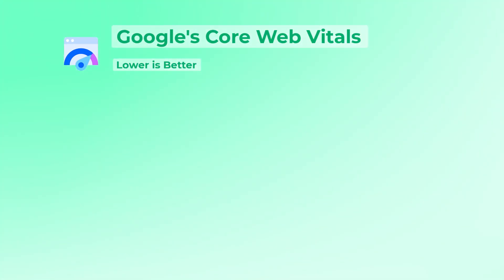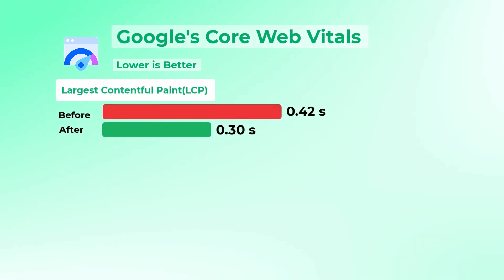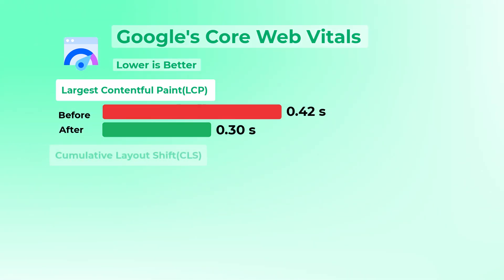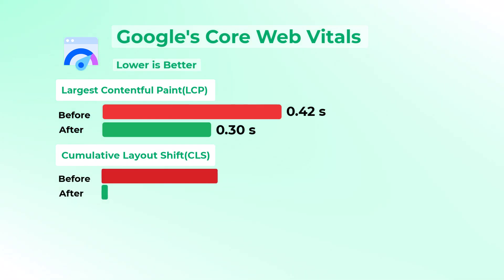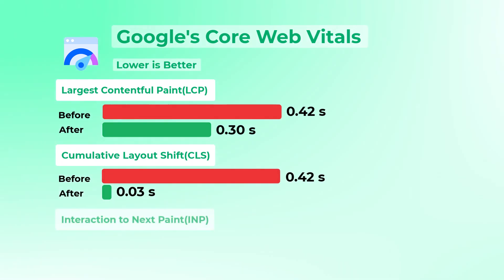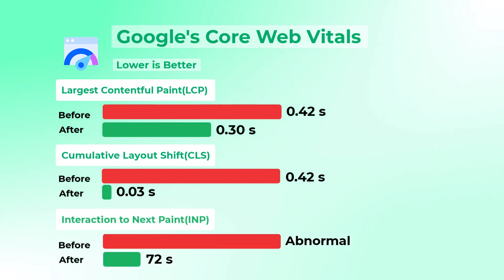Largest Contentful Paint has been reduced to 0.30 seconds from 0.42 seconds — it means content appears faster. There is the biggest improvement in the Cumulative Layout Shift, almost a 99% decrease. The INP metric has also been reduced to 72 milliseconds, so your forms respond more quickly to user input.